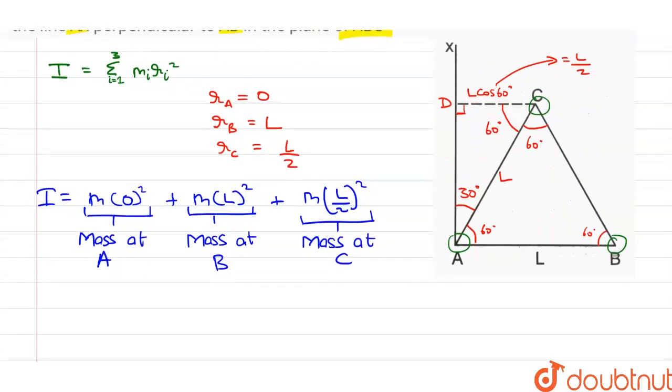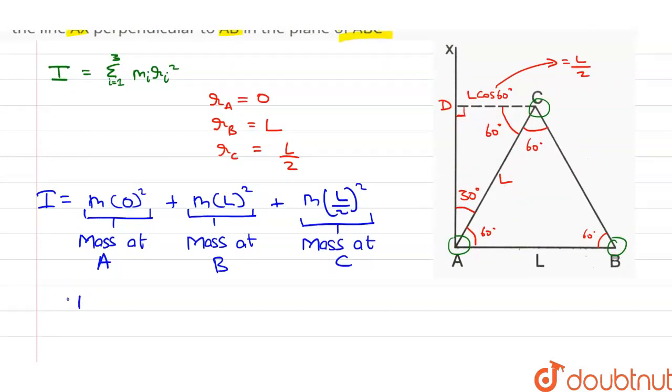Since all these masses are equal to m, we can take m common outside. So this term becomes 0, so we'll remove it from the equation. We have left with L square plus L square by 4.